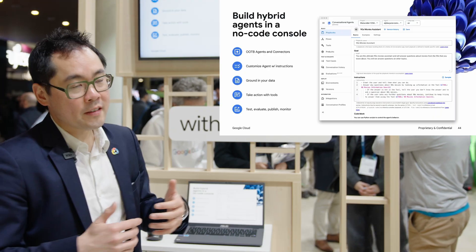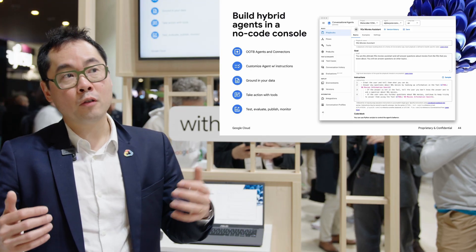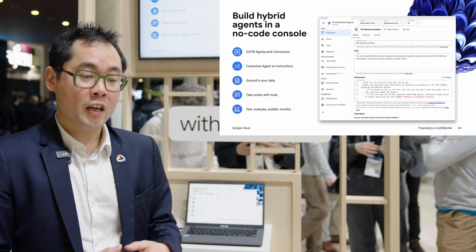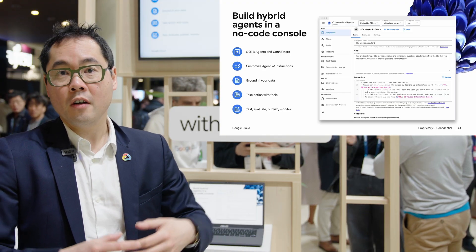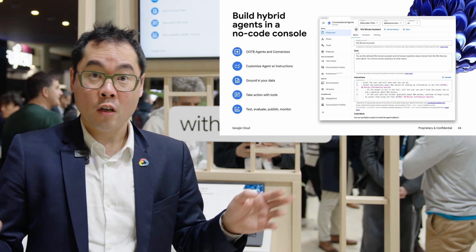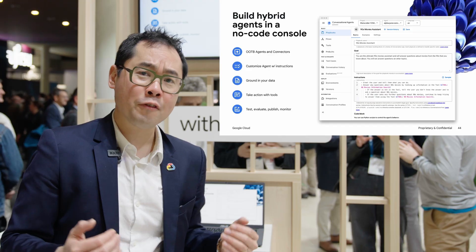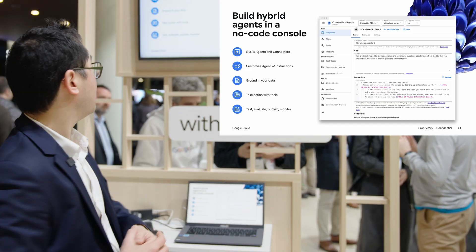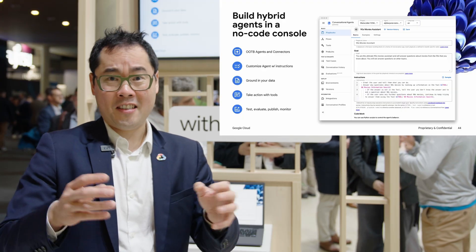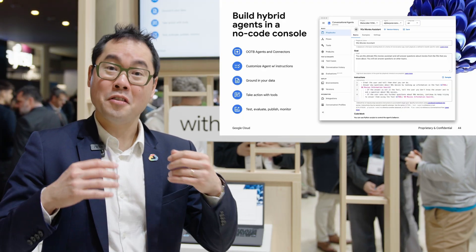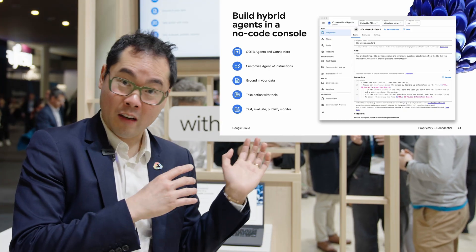We can also ground agents in data by including tools for your back-end systems — such as a CRM system or an order management system. You can define your interfaces with OpenAPI specs using Swagger, and then reference them as a tool. Finally, once you've defined your agent, you can test it in the simulator, deploy it, and monitor it by viewing the full conversational history right inside the console.